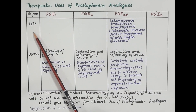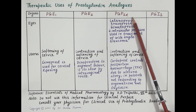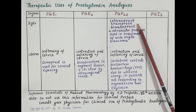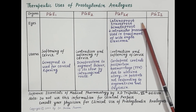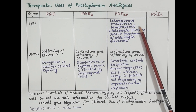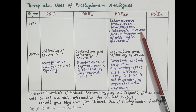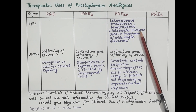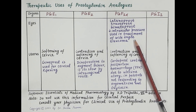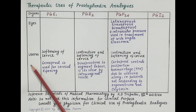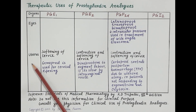Regarding the effect on eyes, topical prostaglandin F2 alpha analogs — latanoprost, travoprost, and bimatoprost — reduce intraocular pressure, thereby reducing ocular hypertension, and are used in the treatment of wide-angle glaucoma.